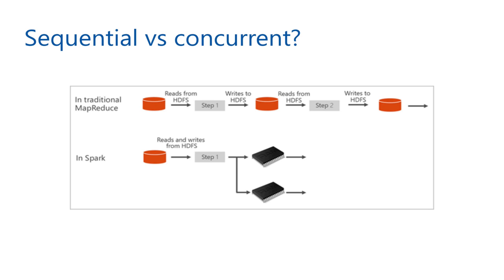So let's take a moment and compare two types of data processing to make it clearer. When we talk about sequential data processing, we are looking at tasks that run one after the other in a specific order. This can be slow and not so efficient, especially when dealing with tons of data, because we have to wait for the previous task to finish before starting the next one.